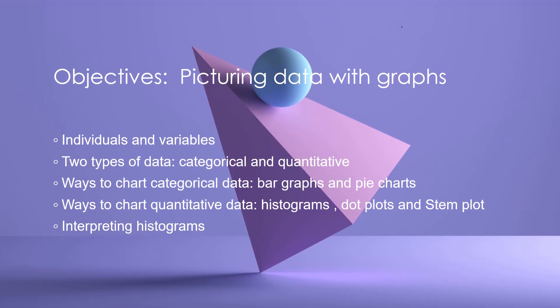The main objective of this video on picturing data with graphs is how to identify variables of an individual, dividing the variables into two types: categorical and quantitative. How to find different types of graphs for categorical data - bar graphs and pie charts - and different ways of finding charts for quantitative data: histograms, dot plots, and stem plots, and also how to interpret a histogram.